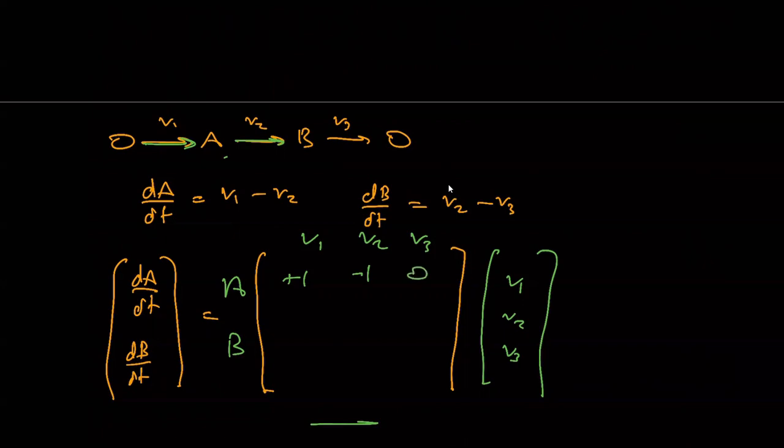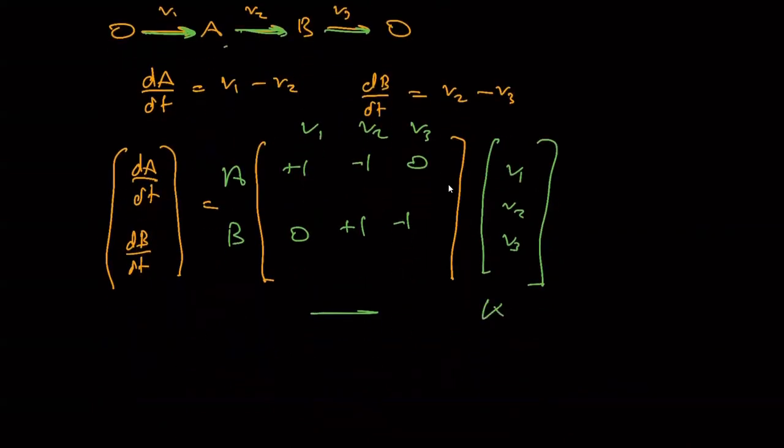The next row, V1, where B isn't involved in V1 at all, so that's a zero. For V2, B is being made, stoichiometric coefficient of one, and for V3, where B is disappearing at a minus one stoichiometric coefficient. So in this way, I can express, I can separate the kinetics from the topology of the network.